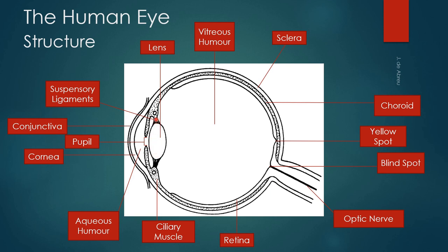The lens is held in place by the suspensory ligaments, and the suspensory ligaments attach the lens to the ciliary muscles, which form part of the choroid. Then behind the lens is the vitreous humor, which fills that space and maintains the round shape of your eye.